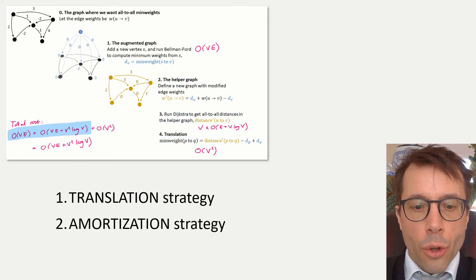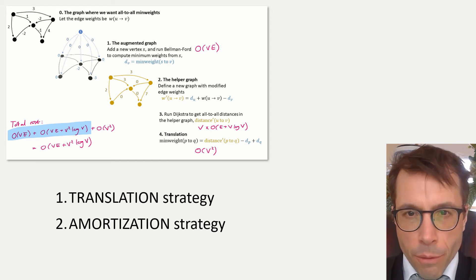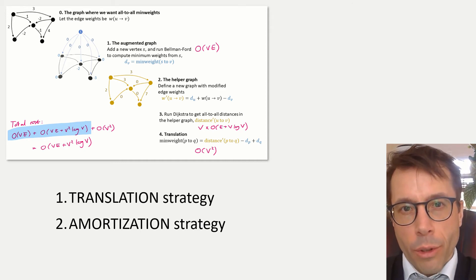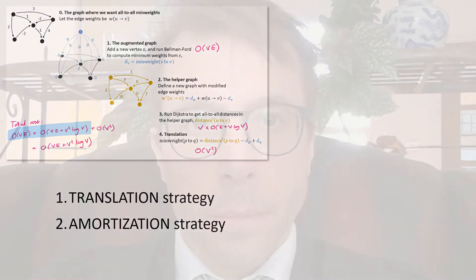And idea two: the amortization strategy. What this means is we do an expensive one-off piece of work in the anticipation that it will pay itself off over a whole load of other steps. In this case, Bellman-Ford is expensive, but it pays itself off because it allows us to run the much cheaper Dijkstra's algorithm for all the V vertices we want to run it from.